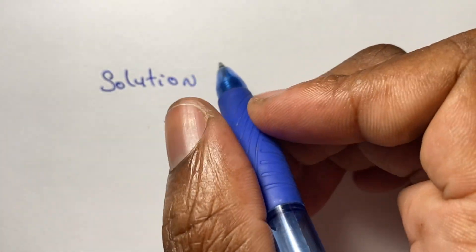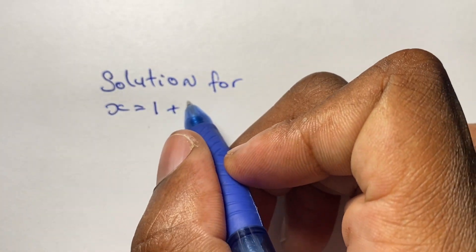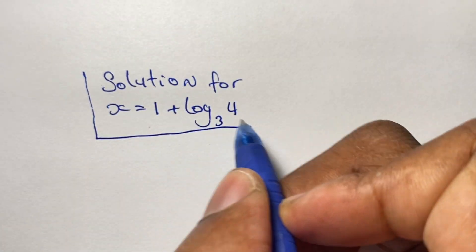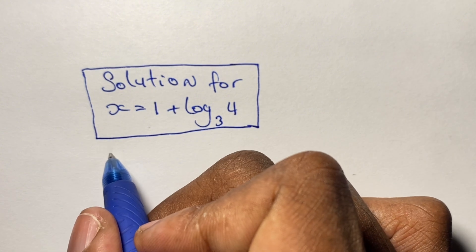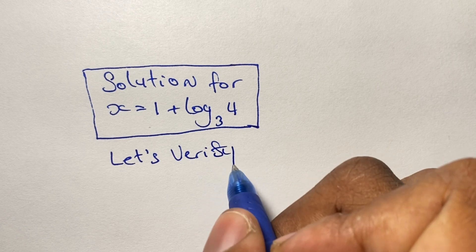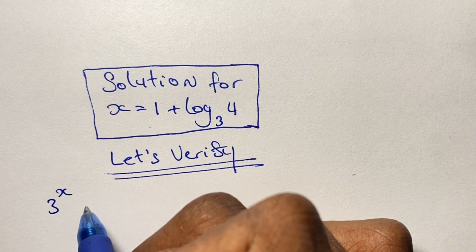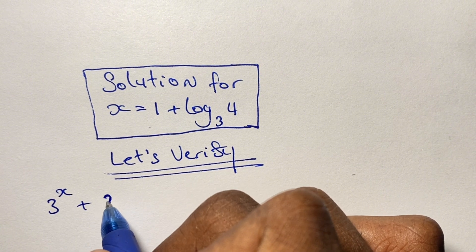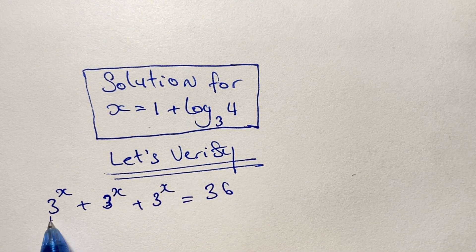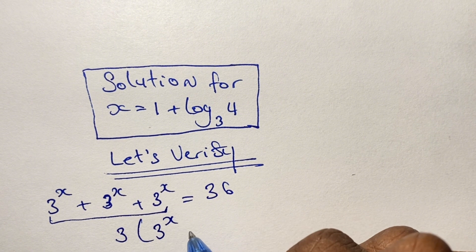From here we write down our solution for x and check to see if our answer is correct. Let's go ahead and verify our solution. Our equation is that 3 to the power of x, plus 3 to the power of x, plus 3 to the power of x, equals 36. As we said before, we can simplify this as 3 times 3 to the power of x equals 36.